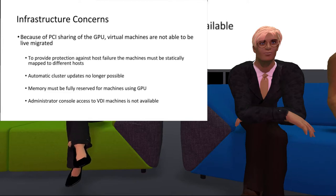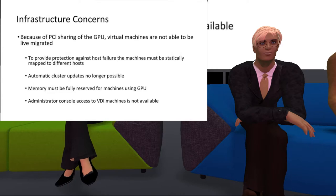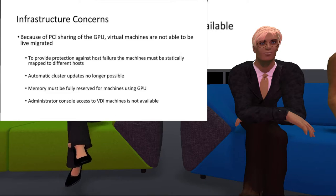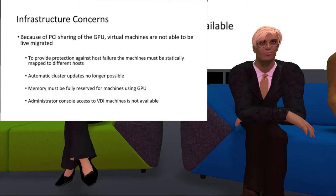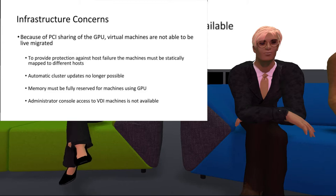The last concern is that typically as a server administrator you can right-click on a machine, get into the console, and assist a user. But these GPUs use the same Blast protocol that the console does. So once we turn this on, our only option for admin access is RDP — a remote desktop session into the machines. If there's a new version of Firestorm that comes out, we have to RDP in to update, or use some built-in assistance tools in Horizon.